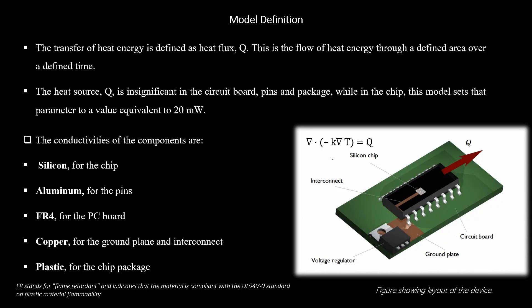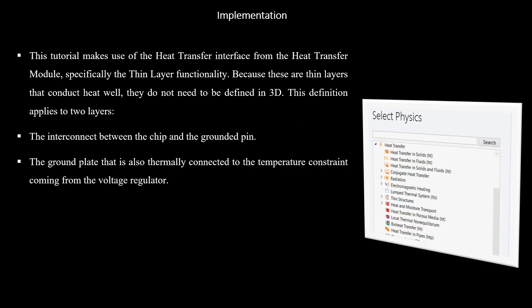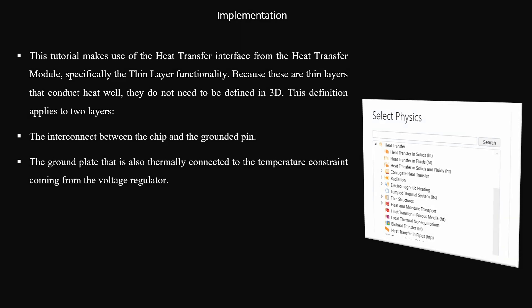Our model definition consists of the chip, the pins, the PC board, the ground plane as well as the interconnect, and also our chip package. We will use silicon for the chip, aluminum for the pins, FR4 for the PC board, copper for the ground plane and interconnect, and we will apply plastic for the chip package.